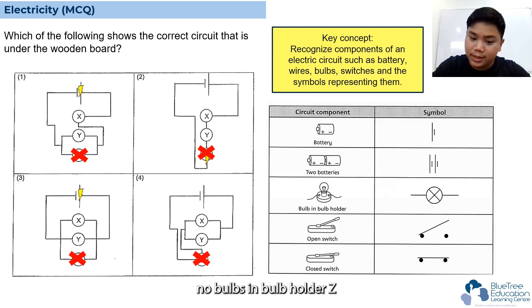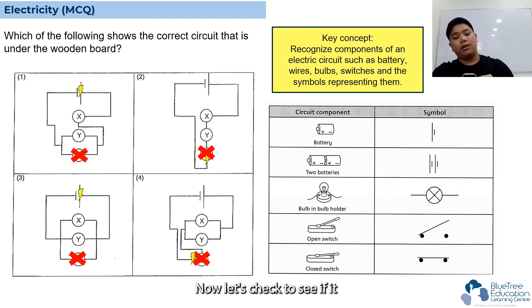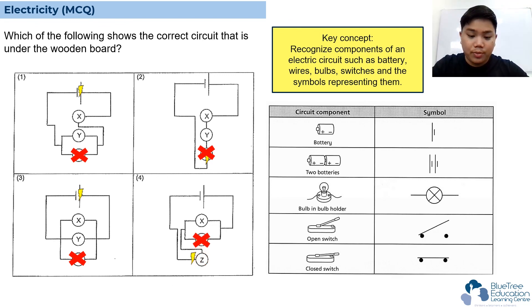Finally, let's look at option four. No bulbs in bulb holder Z - can current flow through it? No, it can't, so it fulfills that observation. Now let's check if it fulfills the other two observations.